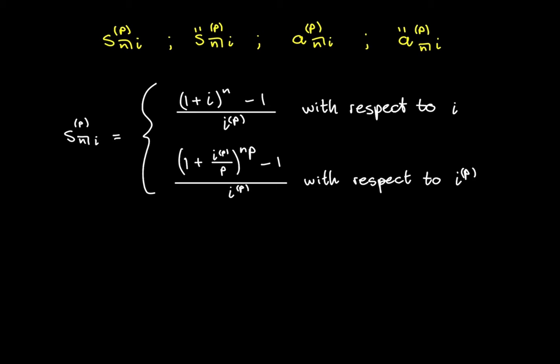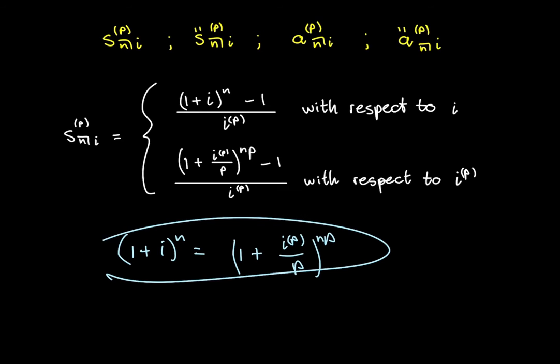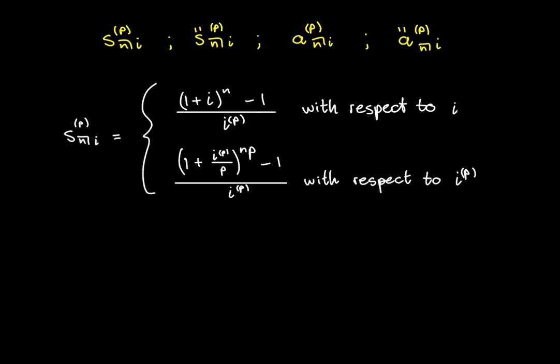So just to prove to you that these two are equal, the only real difference is these two terms. So we know that those are equal because that's how we work out effective interest rates. So we have 1 plus i is normally equal to 1 plus i^(p) over p to the power of p. But now we've just raised both sides by n. So that still holds true, that equality still holds true. And so it's clear to see then that those two formulae are equal.